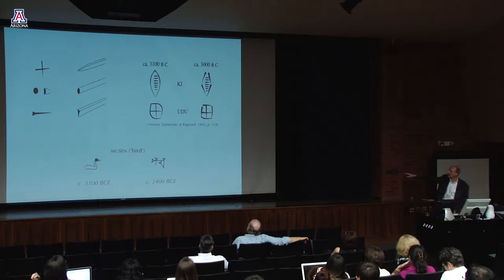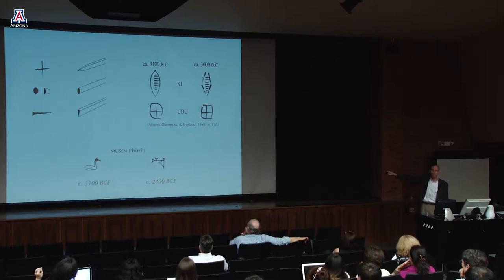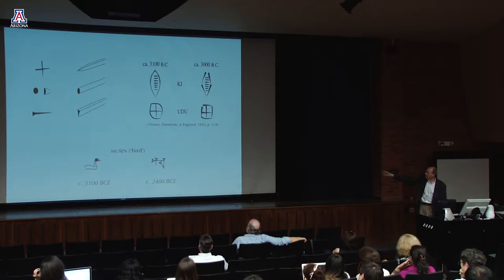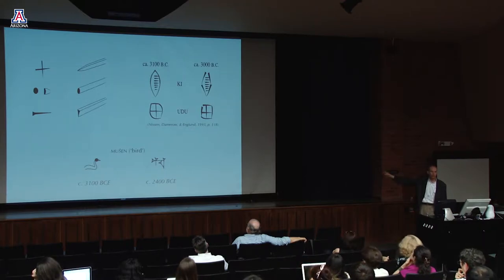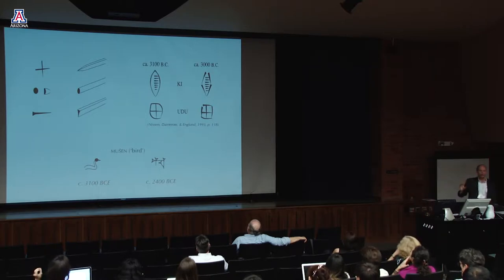By 2400 BC there was a radical change. The orientation shifted from vertical to horizontal writing. Where you once had curved lines, you now had straight wedge marks — circles became squares. This abstraction was one of the things that made writing possible at scale.